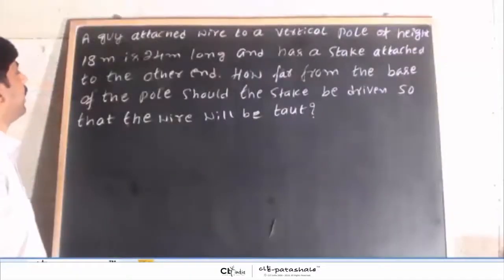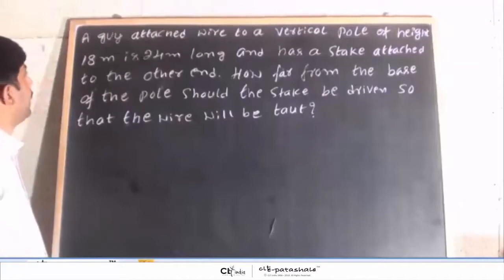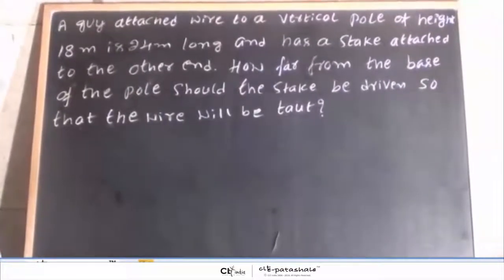Children, we will do a problem on Pythagoras theorem. A guy attached wire to a vertical pole of height 18 meter is 24 meter long.